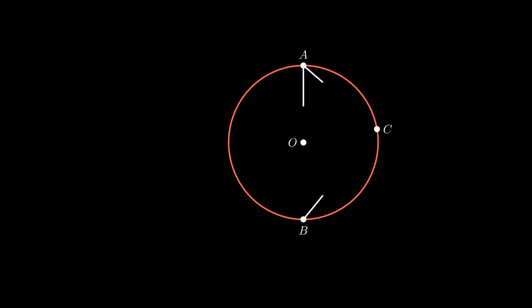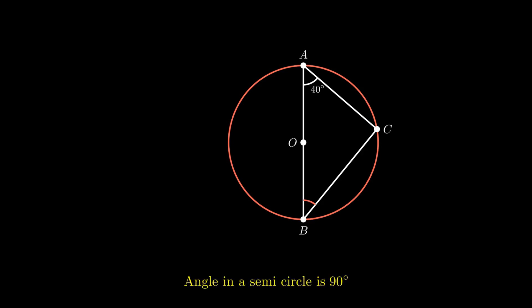Moving on to the next one. Consider a circle with center O. A, C and B are points on the circle such that AB is the diameter and angle BAC equals 40 degrees. We need to find the value of angle ABC. Since the diameter divides the circle into two halves known as semicircles, therefore by using the theorem that the angle in a semicircle is 90 degrees, angle ACB equals 90 degrees.